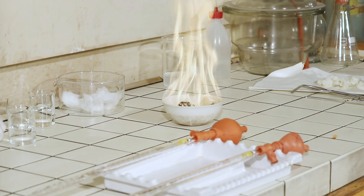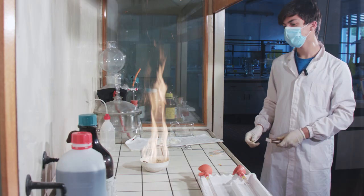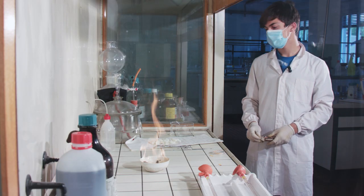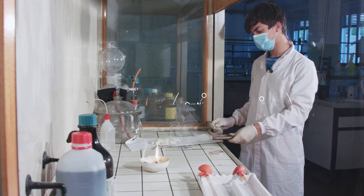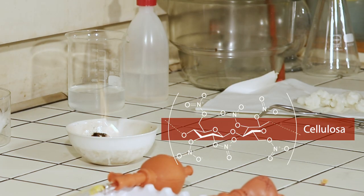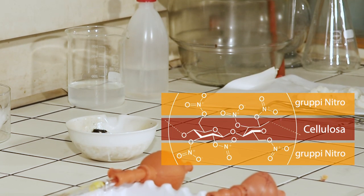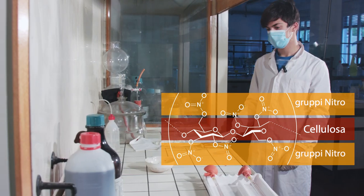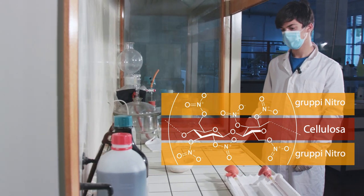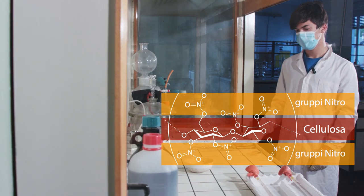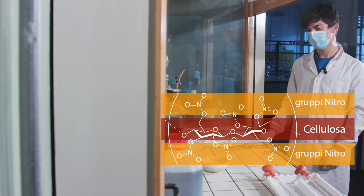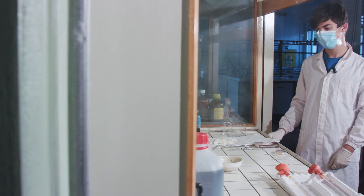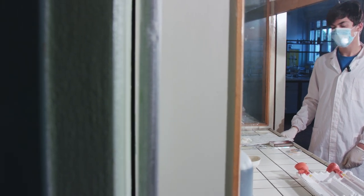Come può il cotone divenire così infiammabile? Grazie alla reazione di nitrazione dei gruppi OH del polimero della cellulosa con gruppi nitro derivanti dall'acido nitrico. I gruppi nitro dei composti organici sono particolarmente reattivi e possono creare evidenti combustioni.